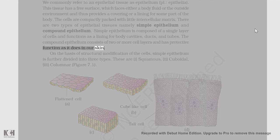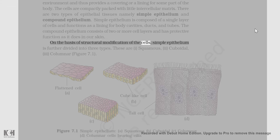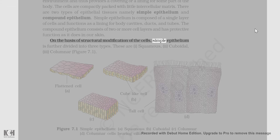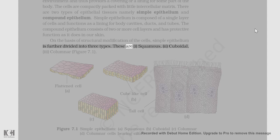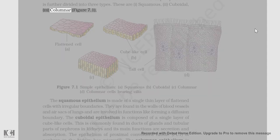On the basis of structural modification of the cells, simple epithelium is further divided into three types: squamous, cuboidal, and columnar (figure 7.1).